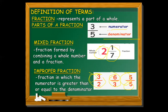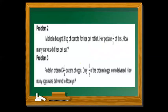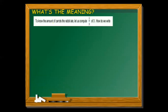We have two problems to answer. First: Michelle bought 3 kilograms of carrots for her pet rabbit; her pet ate one-third of this — how many carrots did her pet eat? Second: Rodolin ordered 3 and one-fourth dozens of eggs; only one-half of the ordered eggs were delivered — how many eggs were delivered to Rodolin?